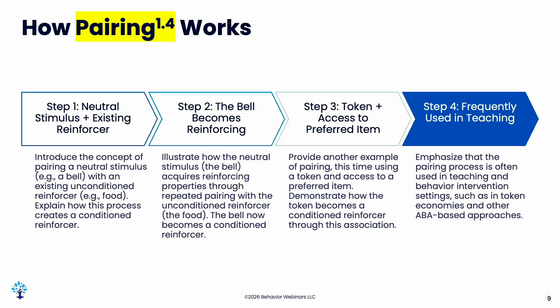Pairing works through classical conditioning. You pair a neutral stimulus with an existing reinforcer. This is Pavlov's dogs: a bell paired with food. Food is the unconditioned reinforcer; the bell is the conditioned stimulus. When you put down food the dog salivates — ring the bell while presenting food repeatedly — and eventually the bell alone triggers salivation. Reinforcers work very similarly.